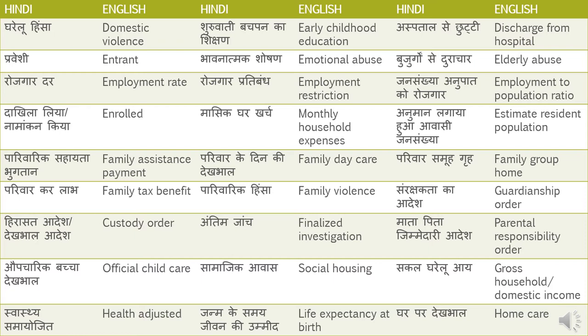Bhavnatmak shoshan — Emotional Abuse. Bhavnatmak means emotional, shoshan means abuse or exploitation. Buzurgon se durachar — Elderly Abuse. Rozgaar dar — Employment Rate. Rozgaar pratibandh — Employment Restriction. Jansankhya anupat ko rozgaar — Employment to Population Ratio. Dakhala liya ya namankan kiya — Enrolled.